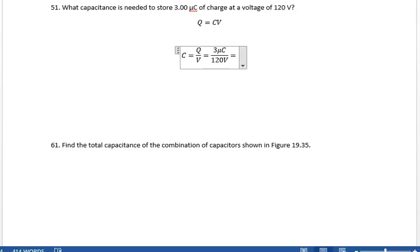Microcoulombs is 3 times 10 to the minus 6, but we can leave it. Let's go ahead. 3 times 10 to the minus 6 coulombs divided by 120 volts.